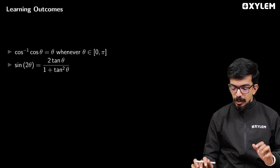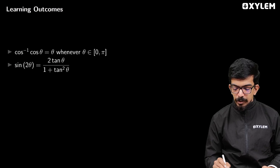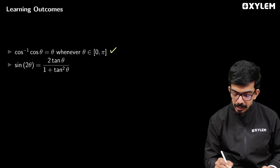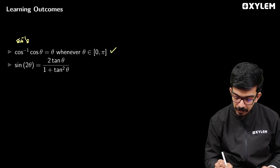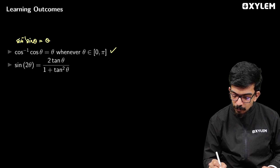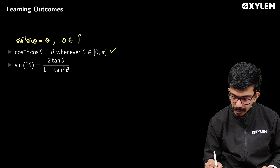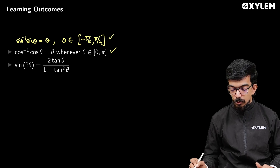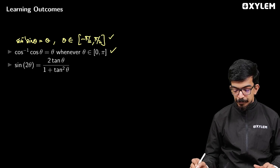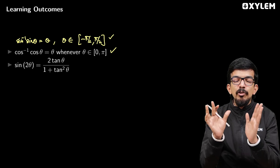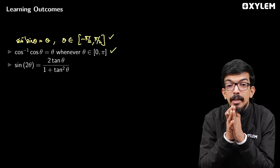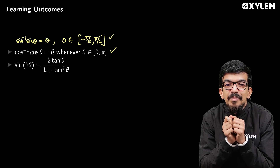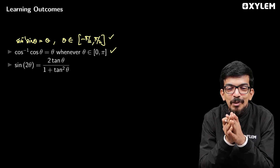If we note the learning outcomes: one is cos⁻¹(cos θ) = θ whenever θ belongs to [0, π] — that is the principal value branch. Similarly, sin⁻¹(sin θ) = θ whenever θ belongs to [−π/2, π/2] — that is the principal value branch. Also, sin 2θ = 2tan θ / (1 + tan²θ). These are the key formulas needed.